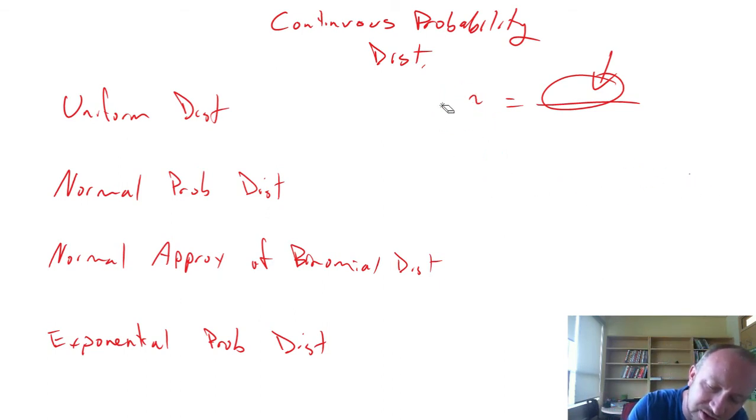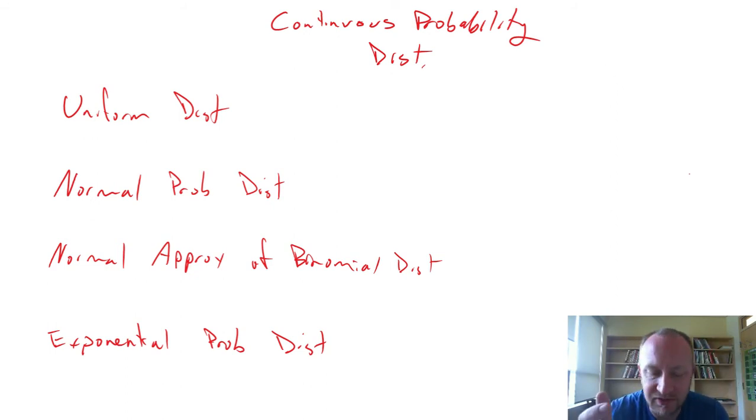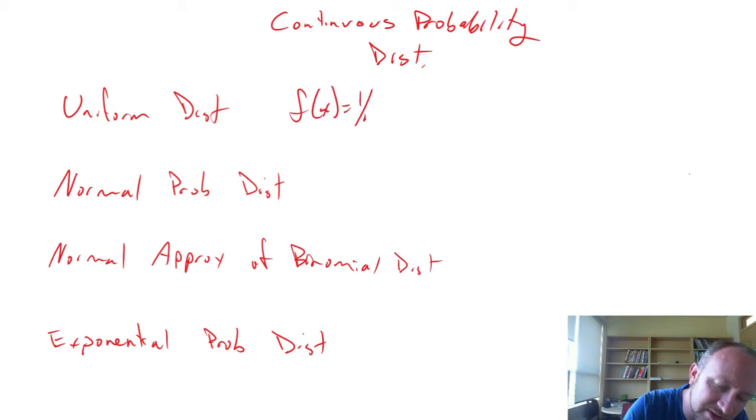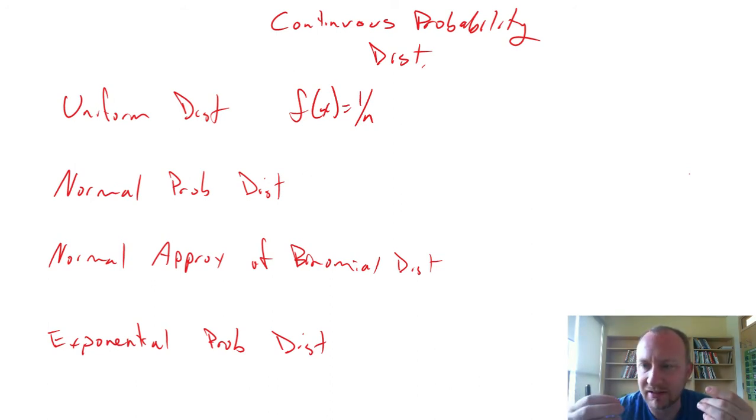If we consider a uniform probability distribution, we had a discrete version of this where any particular probability was equal to 1 over n. So every possible outcome had an equal probability of occurring. This is like the rolling the dice or the flipping the coin example.